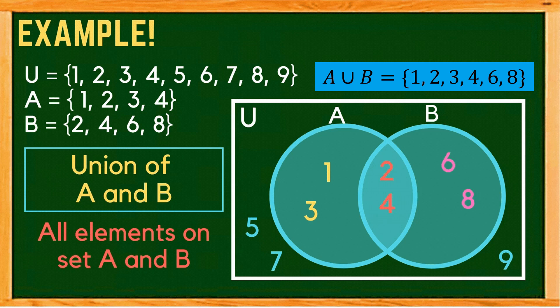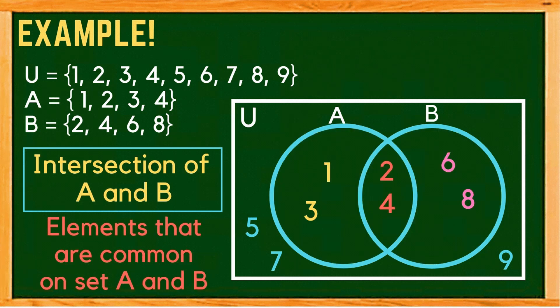Next is the intersection of set A and set B. When we say intersection, we take only the common elements of the two sets. On the Venn diagram, we shade the overlapping part of the circles of set A and B. So the intersection of set A and B is 2 and 4.